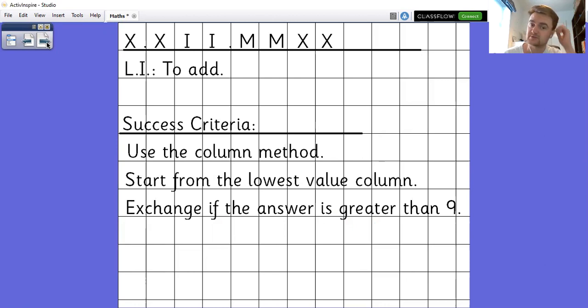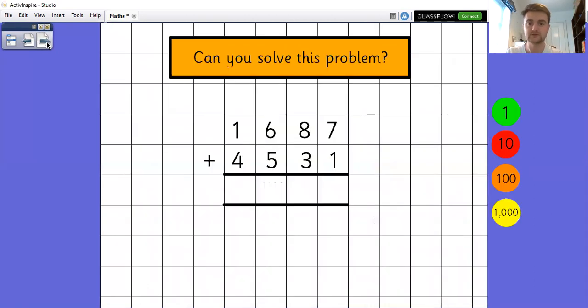So with our column method of addition, we need to make sure that we are always starting from the lowest value column. Now in all of these sums, it's the ones column. But the reason I put start from the lowest value column is because when we later on in the year start dealing with decimals, you always start from whatever the smallest value is. So in this case, it's the ones, but it's not always the ones. If your answer ends up being more than 9 and ends up being two digits, then that's where you need to exchange. It's where you need to swap for the next column so that we can move across. I'm going to have a look at the visual representations of that as well. So here we have a sum. So pause it, have a go at solving that, and then we'll go through the different ways that we can do that.